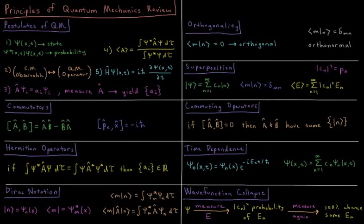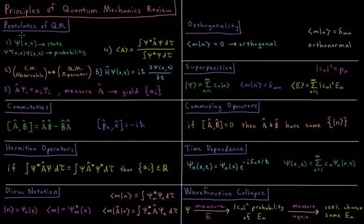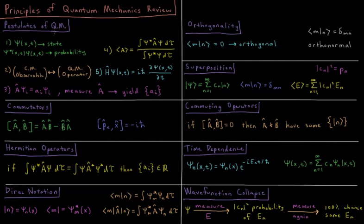This video is a review of the Principles of Quantum Mechanics chapter in the Quantum Chemistry and Spectroscopy Playlist. We start with the five postulates of quantum mechanics, things that we can't prove but are first assumed to be true and then later proved by the validity of their predictions.